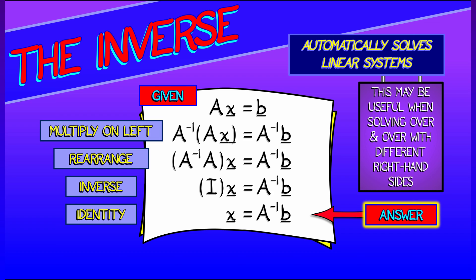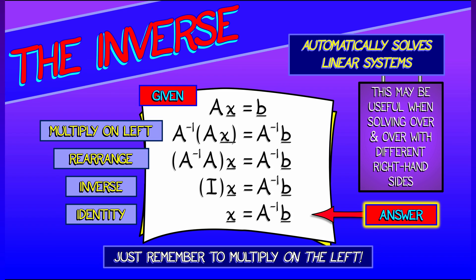Now, let's say you've got a problem where you have to solve Ax=b over and over again for different values of b. Well, pre-computing that inverse might be useful for updating those solutions. Just remember, when you do, multiply by the inverse on the left.